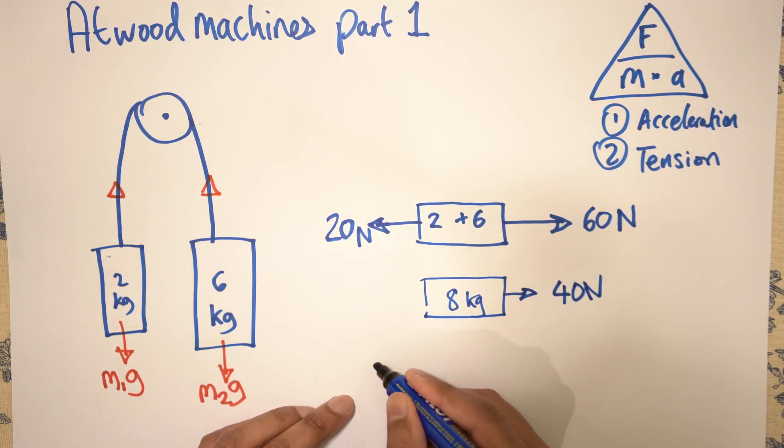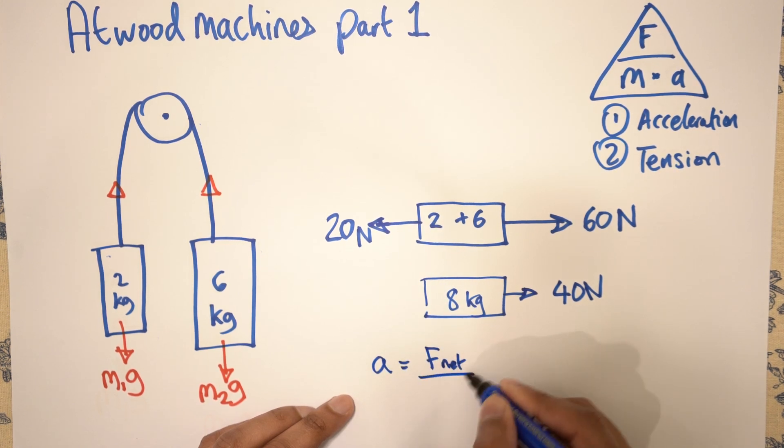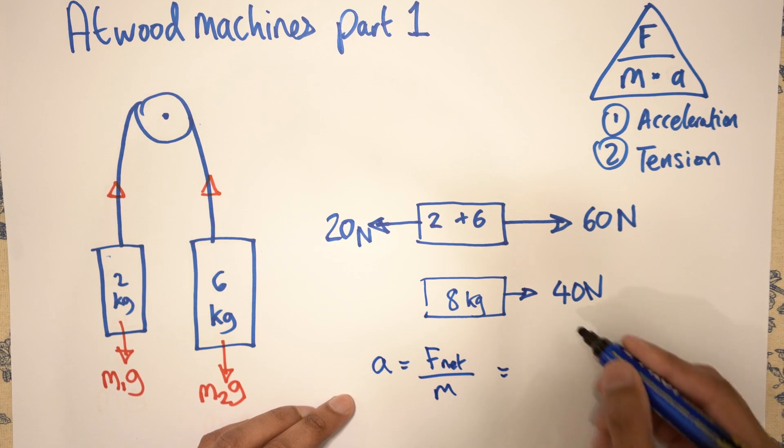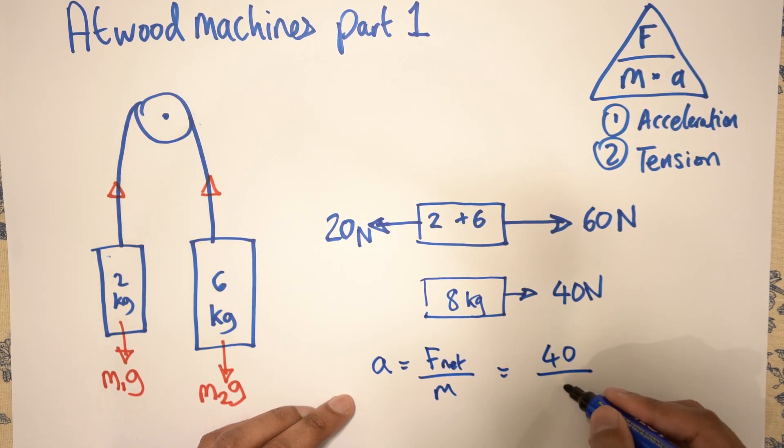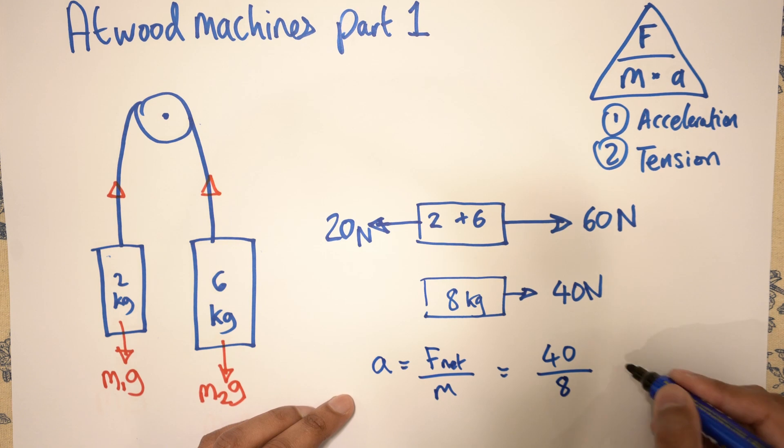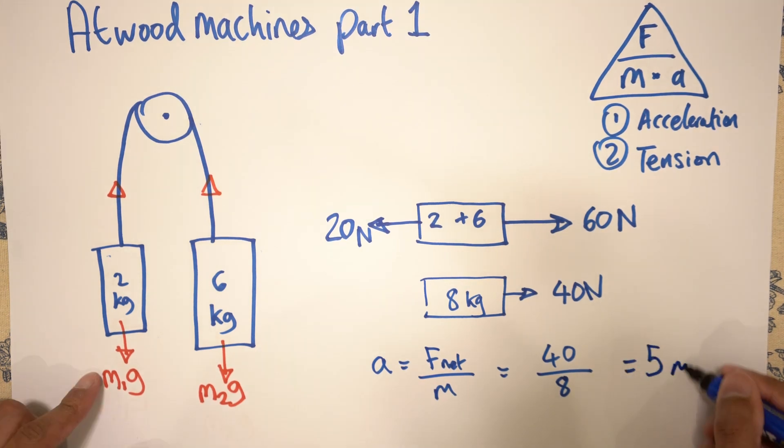So we write that over here. A equals F net divided by m. F net is 40 divided by the mass, which is 8. 40 divided by 8, 5 meters per second squared.